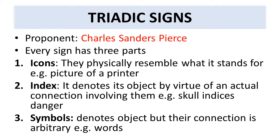The third part is symbols. Symbols do not have such direct relations as icons or indexes. Rather, their relations are arbitrary in nature — there is no one-to-one correspondence between the word and the mental concept it represents. For example, we have the word 'pen,' but why do we call a pen a 'pen'? There is no inherent relation; the relation is arbitrary.